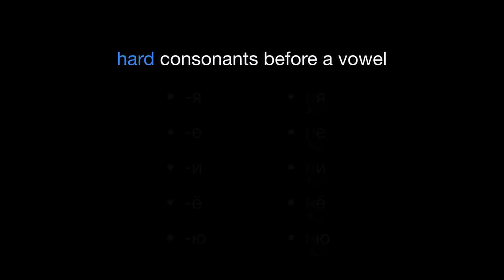Now, to write a hard consonant before a vowel sound, use one of these vowel letters: А, Э, Ы, О, and У. So here's how we can write a hard N before these vowel sounds: НА, НЭ, НЫ, НО, НУ. Again, using these vowel letters shows us that the preceding consonant is hard.